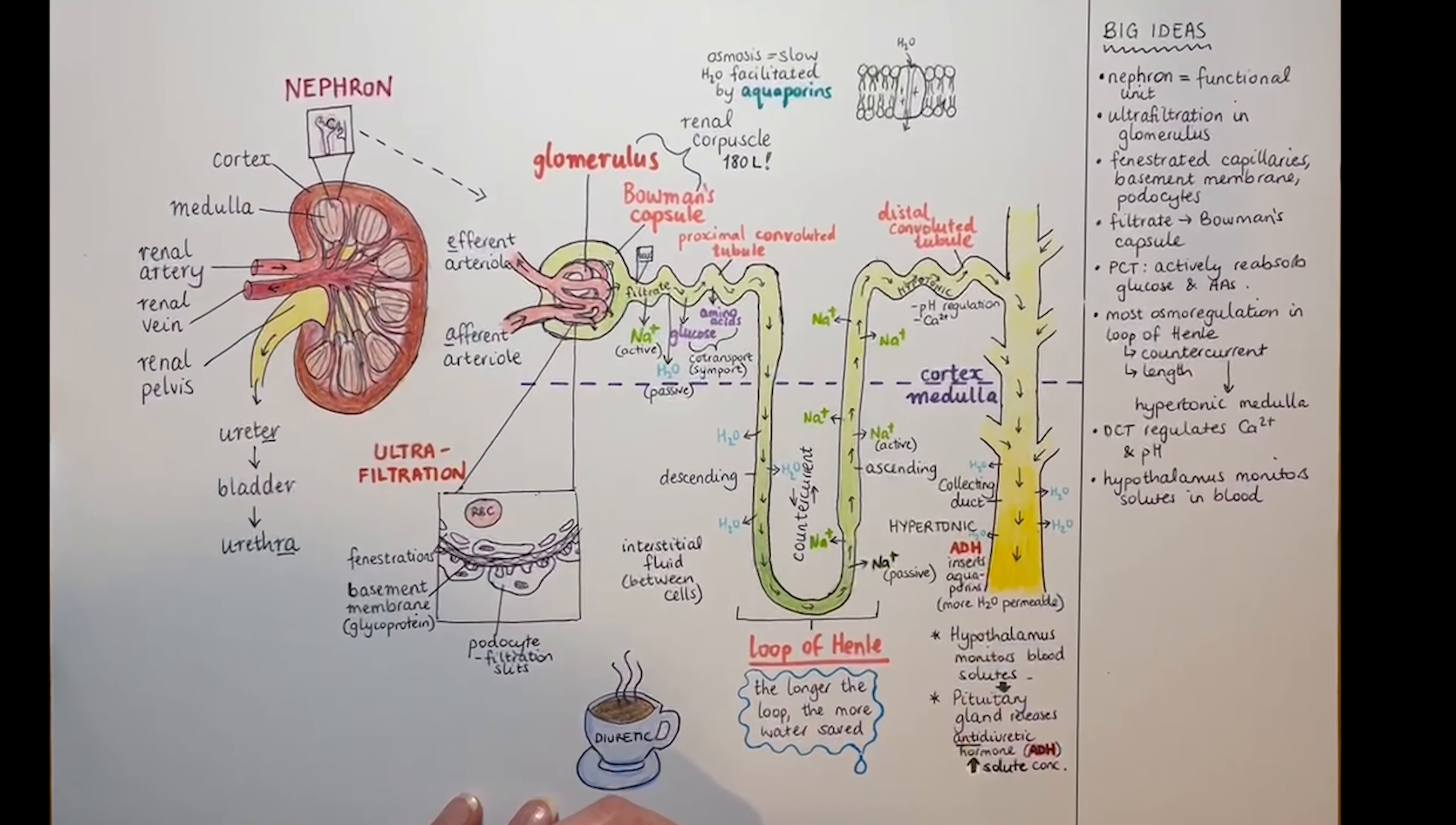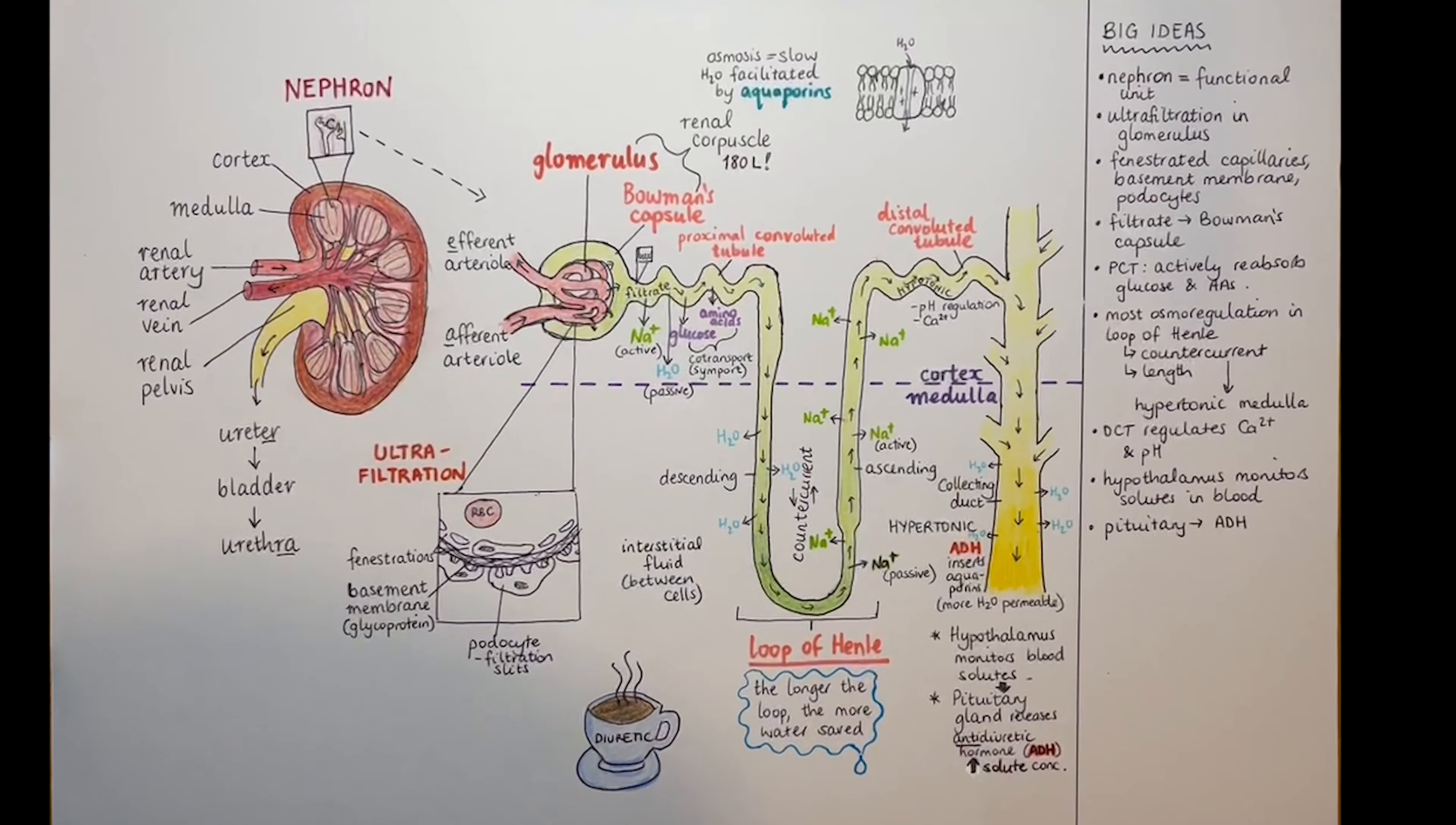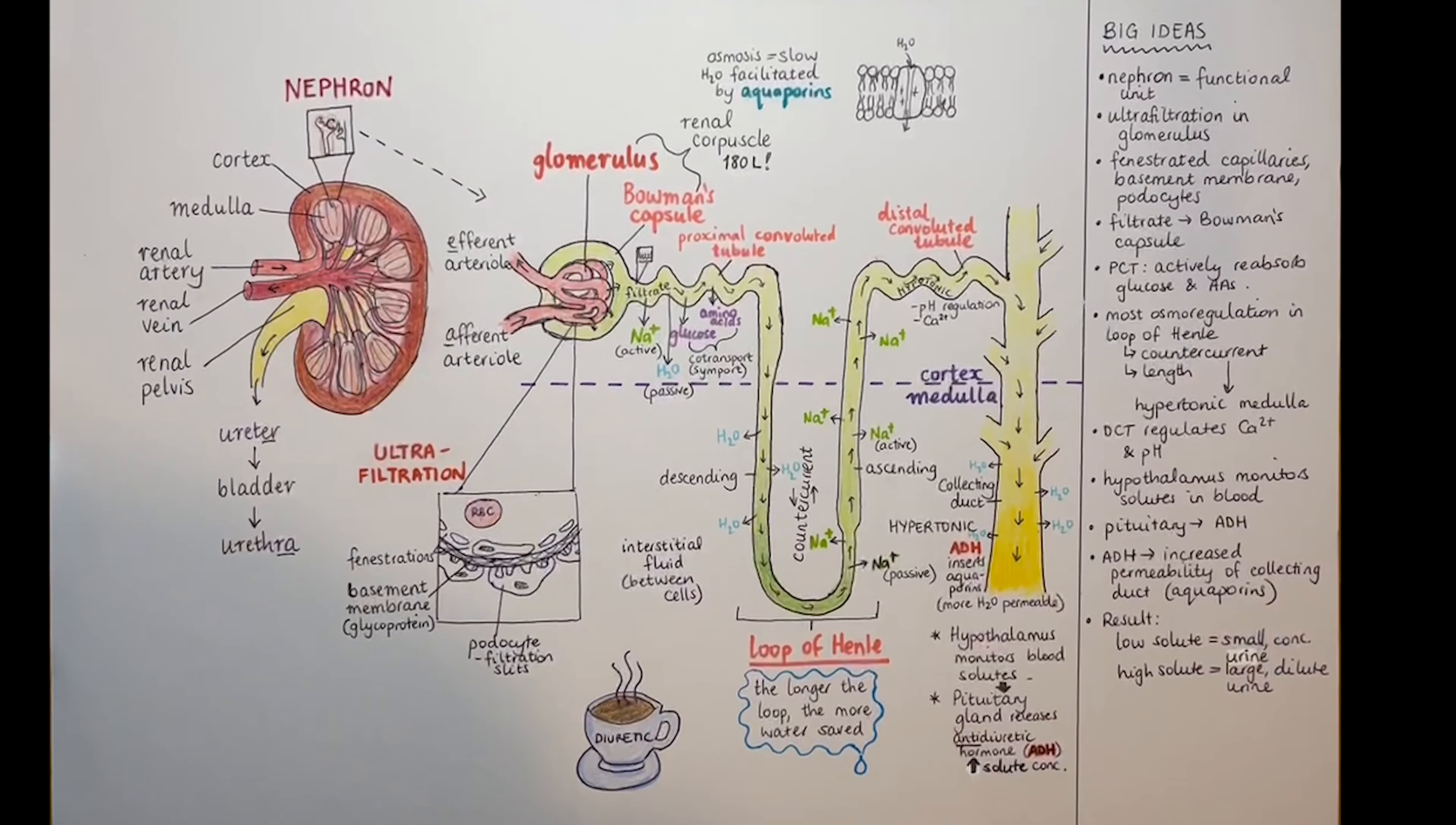The distal convoluted tubule, abbreviated here to DCT, regulates calcium ions and pH. The hypothalamus in the brain monitors blood solute concentration. It instructs the pituitary gland to release antidiuretic hormone. Antidiuretic hormone causes a chain of events that inserts aquaporins into the collecting duct, making it more permeable to water. And then finish your answer with the actual result: if blood solutes are high, then more water is saved. If blood solutes are low, more water is excreted. So consider your checklist and then tailor your answer.